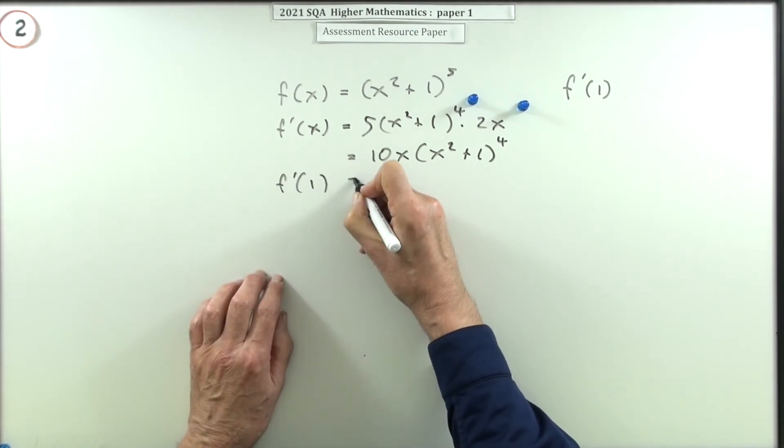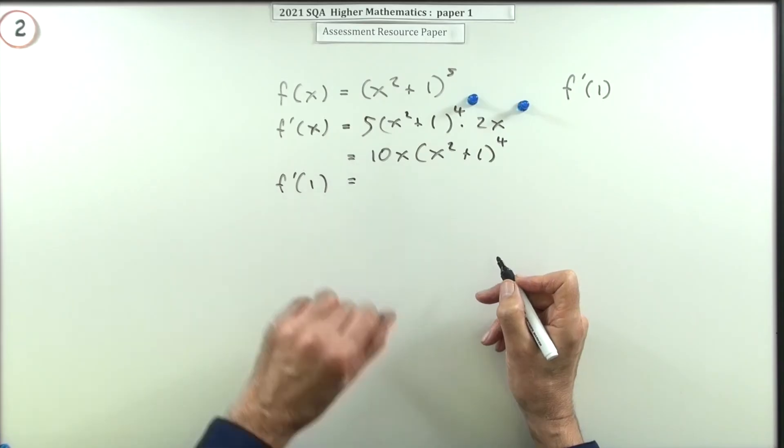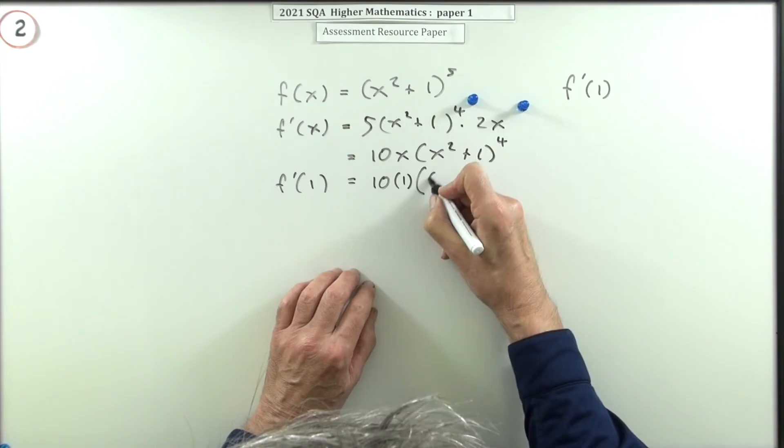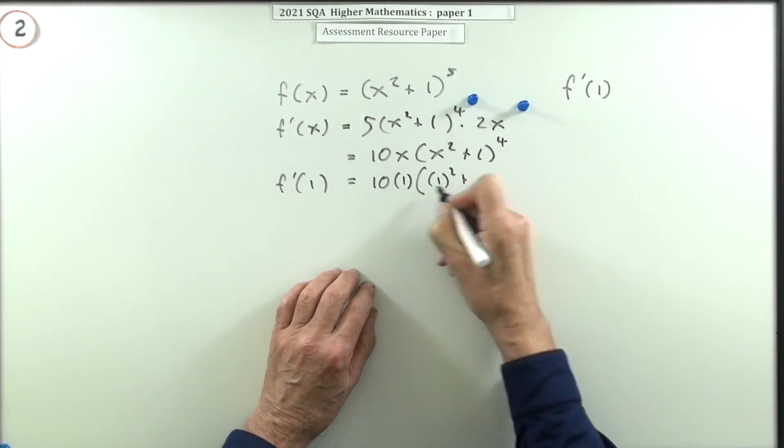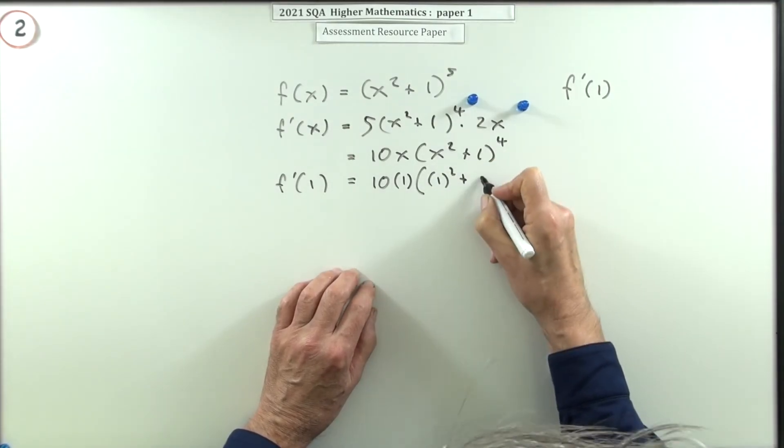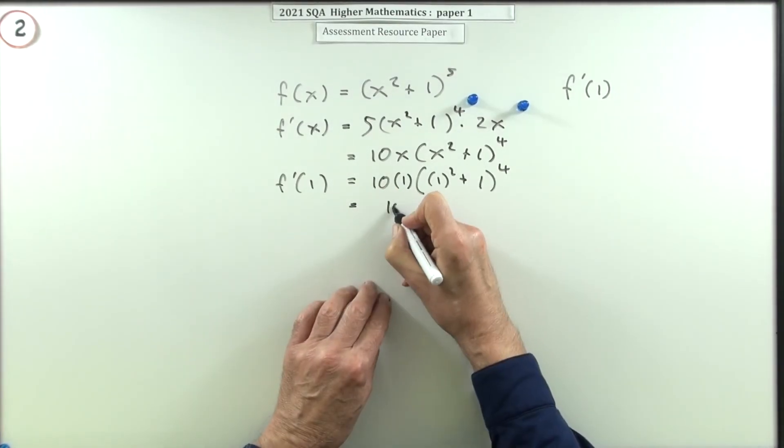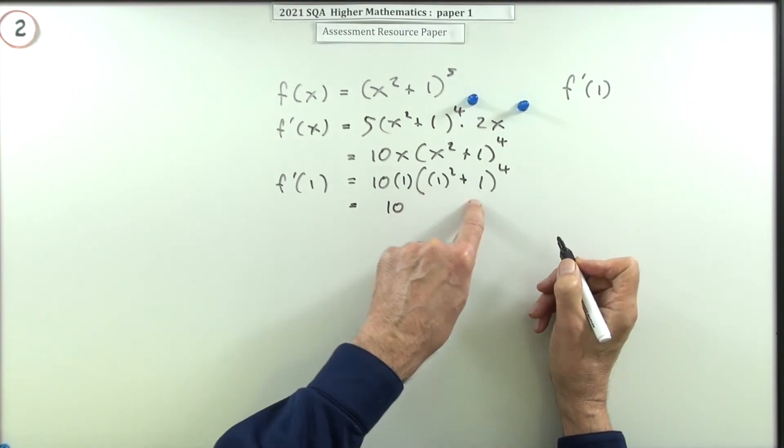So it'll just be 10 times one. I'll just pop that bracket: times one squared—don't need those brackets of course, in fact it might look more confusing—to the power four. So 10 ones are 10, one squared is one, one and one is two.